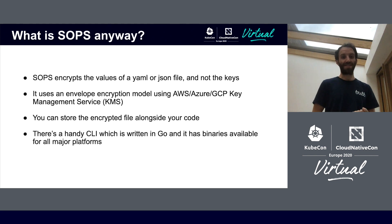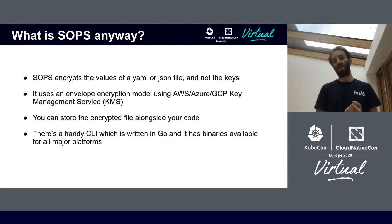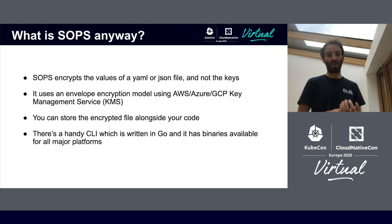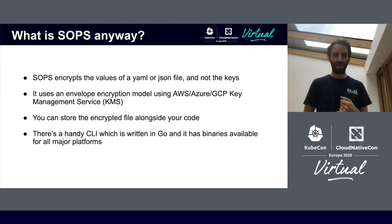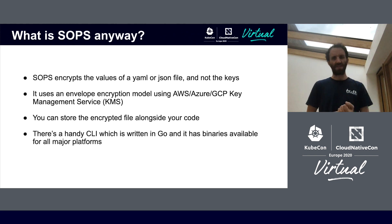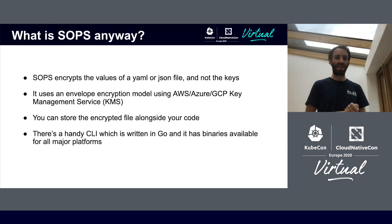One advantage to this pattern is that you can store the encrypted file alongside your code. This means you can check in and deploy your configuration using your CI pipeline. You can also have code review for configuration changes. As only the values are encrypted, diffs are meaningful and you can see exactly which keys change as part of a commit.